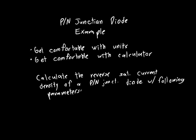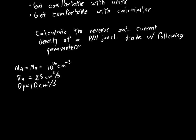The parameters are: NA equals ND equals 10^16 per centimeter cubed. DN, the diffusion coefficient for electrons, is 25 centimeters squared per second. DP is 10 centimeters squared per second. The intrinsic carrier concentration ni, a number you should memorize for silicon, is 1.5 times 10^10 per centimeter cubed. The tau P and tau N are both equal to 5 times 10^-7 seconds.